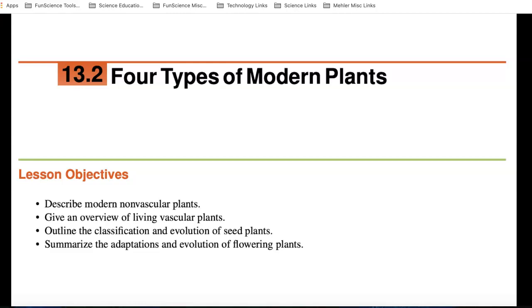Welcome to 13.2. In 13.1 we talked about the evolution of plants. What we're going to look at in this section are four types of modern plants. And what they mean by modern plants, the plants that are still around today.